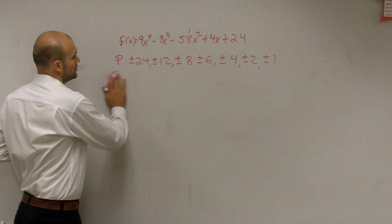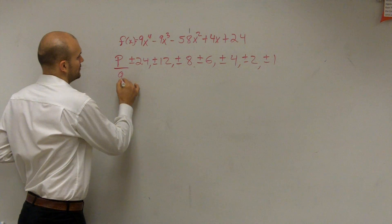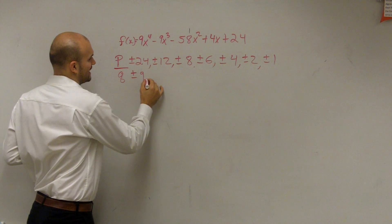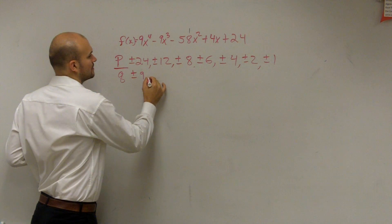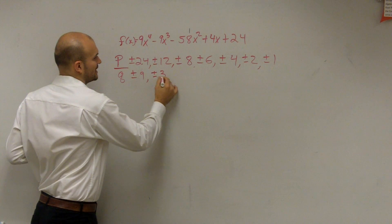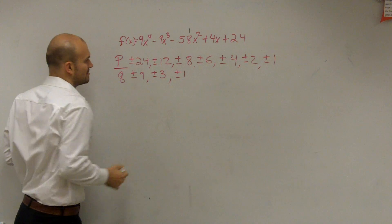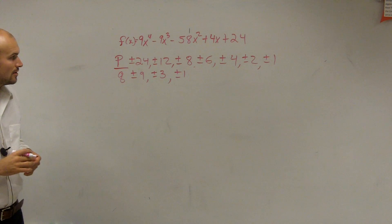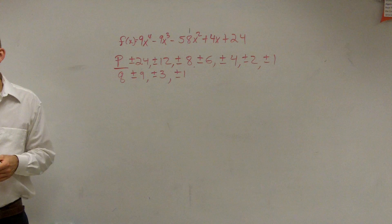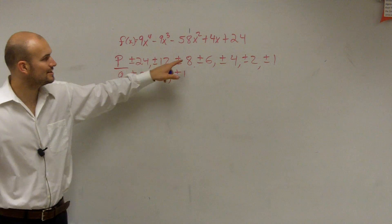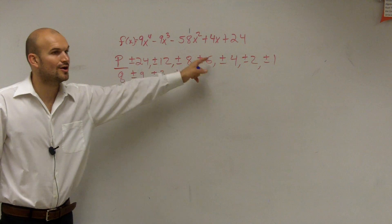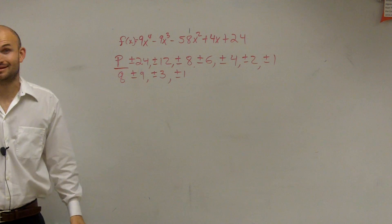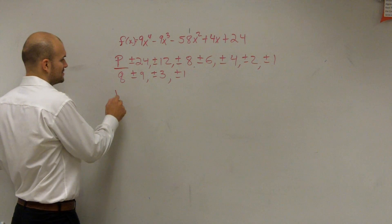Now let's look at q. That's going to be plus or minus 9, plus or minus 3, and plus or minus 1. So what I need to do is put every single one of these numerators over each one of the denominators. This is a big problem — this is going to be a lot of solutions.